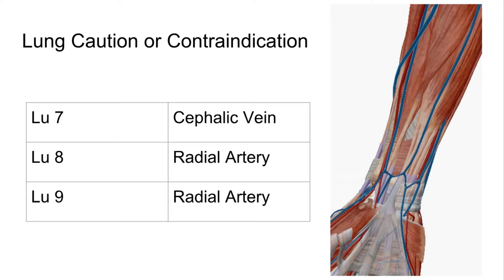First we're going to go over the lung channel. Lung channel has three high-yield points: Lung 7, Lung 8, and Lung 9. Lung 7 is high yield because of just how many titles it has. It's the Luo connecting point of the lung channel, the master point of the Ren, and the command point of the head and neck. It also expels wind cold — in syndromes where the patient has chills, itching nose and throat, coughing, a thin white tongue coat, a superficial and tense or tight pulse, indicating wind cold.